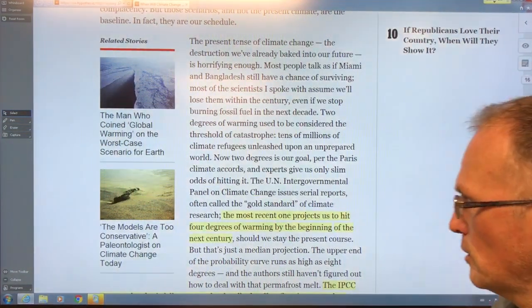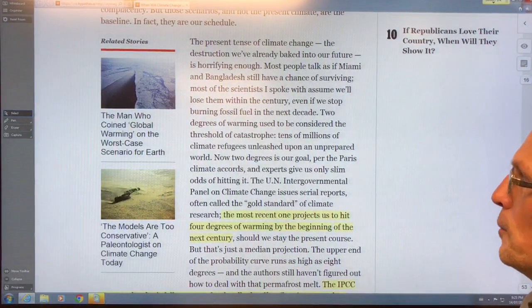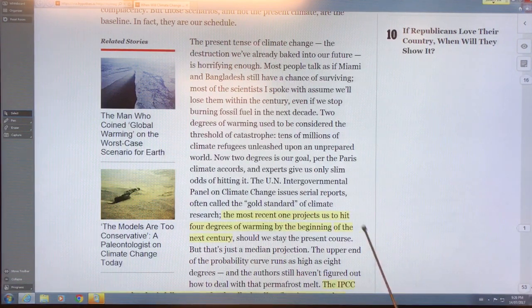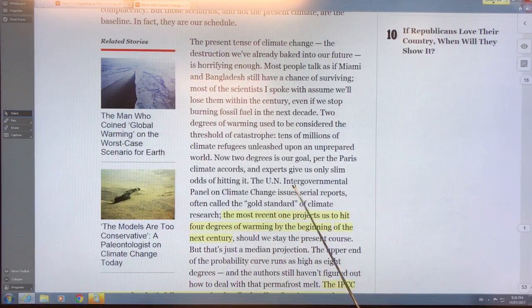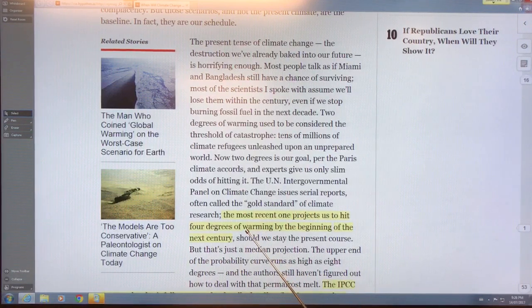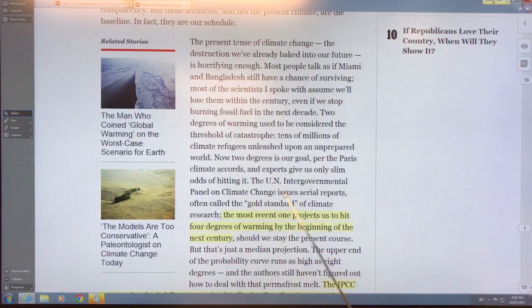Okay, so continuing along with the science comments on the paper 'The Uninhabitable Earth.' As the paper points out, the UN IPCC projections are for four degrees of warming by the beginning of next century. That's four degrees Celsius, a median projection based on median projections, not extreme, not worst case.